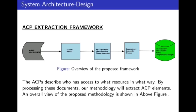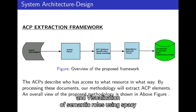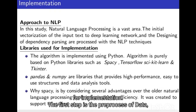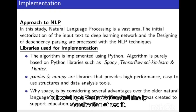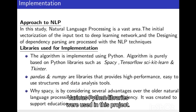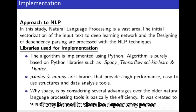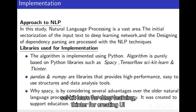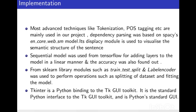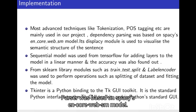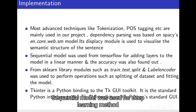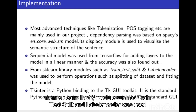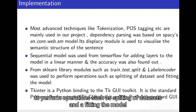The extracted sentences were later used for semantic parsing and visualization of semantic roles using spaCy. For implementation, the first step is preprocessing of data, followed by vectorization, and finally visualization of results. Various Python libraries were used: spaCy for dependency parser visualization, scikit-learn for deep learning, and TK interface for creating the UI. The sequential model used sklearn modules such as train-test split and label encoder for splitting the dataset and fitting the model.